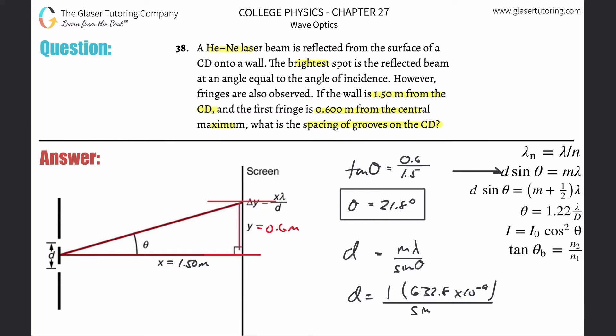And then divide that by the sine of that angle we just found of 21.8. And let's see what we get. So it's basically 632.8 times 10 to the minus 9th divided by the sine—make sure your calculator is in degree mode—the sine of that exact number. And so this works out to be about 1.70 times 10 to the minus 6 meters. If you needed to convert that into nanometers, micrometers, you know what to do. That's about 1.7 micrometers.